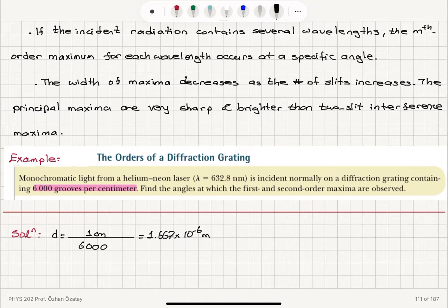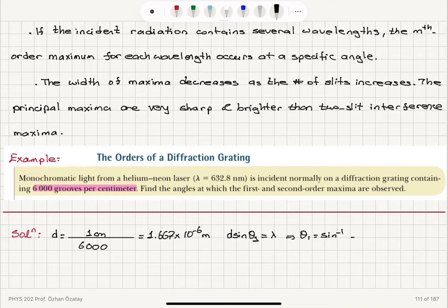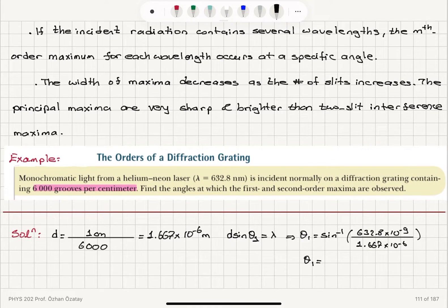For constructive interference, the condition is D sinθ = Mλ. For the first order maximum (M = 1): θ₁ = sin⁻¹(λ/D) = sin⁻¹(632.8 × 10⁻⁹ m / 1.667 × 10⁻⁶ m), which gives θ₁ = 22.31 degrees.